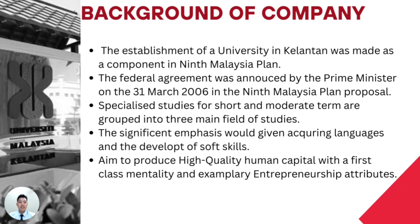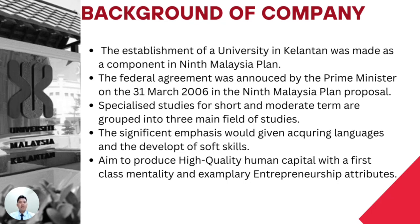The next slide is about the background of the company, University Malaysia Kelantan. The establishment of the university was made as a component of the Ninth Malaysia Plan. The federal agreement was announced by the Prime Minister on 31 March 2006. The specialized study for the short and moderate term is grouped into three main areas, with emphasis on language, development of soft skills, and aims to produce high-quality human capital with a first-class mentality and exemplary entrepreneurship as the core of the university.